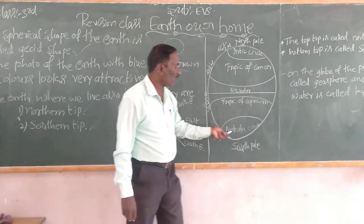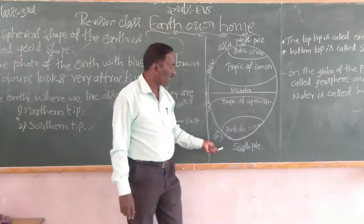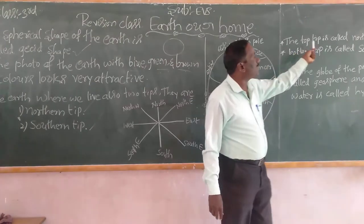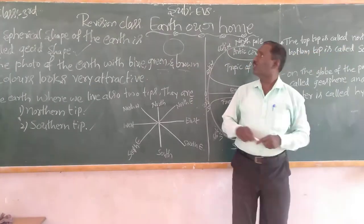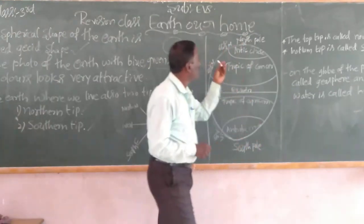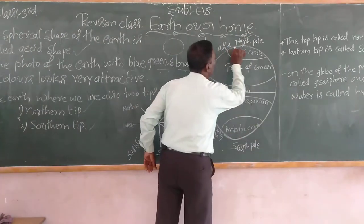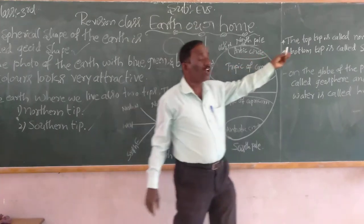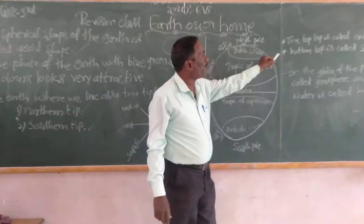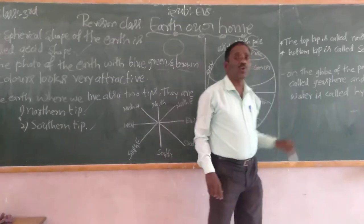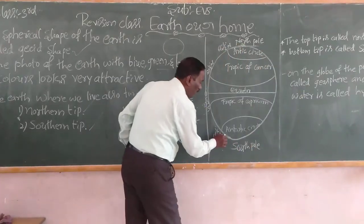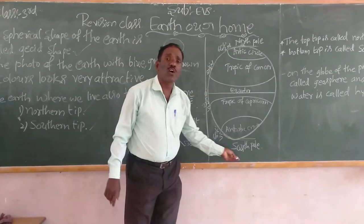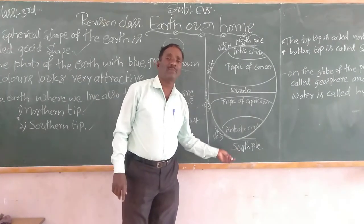The top tip of the earth is called the North Pole. The bottom tip is called the South Pole.